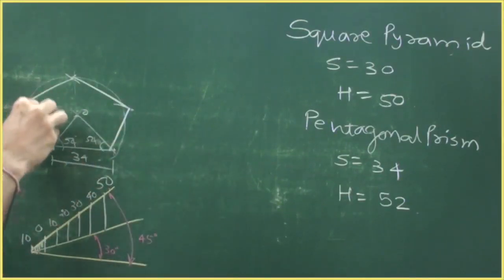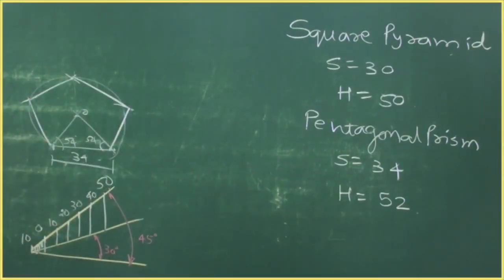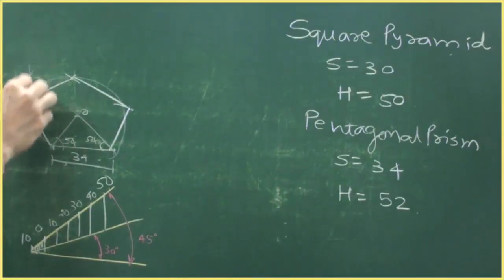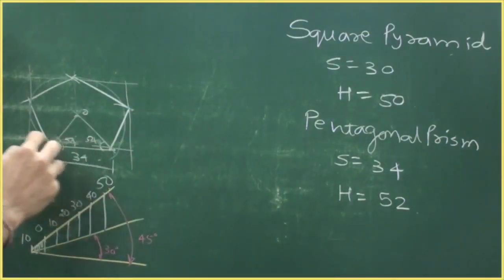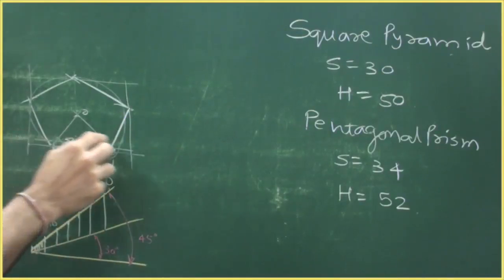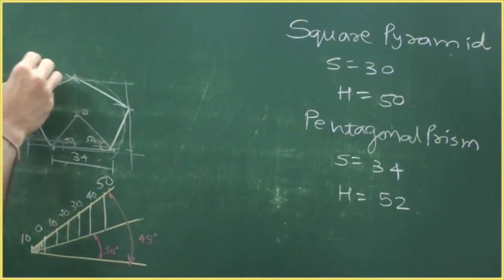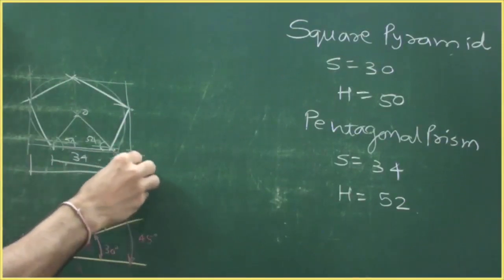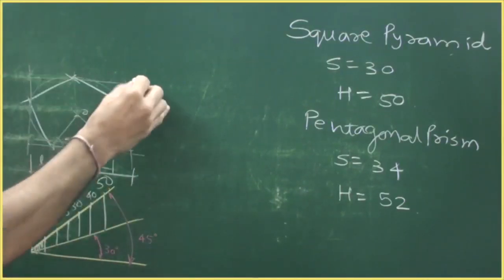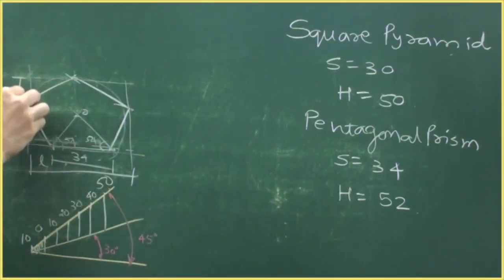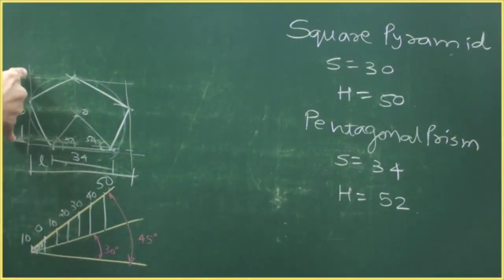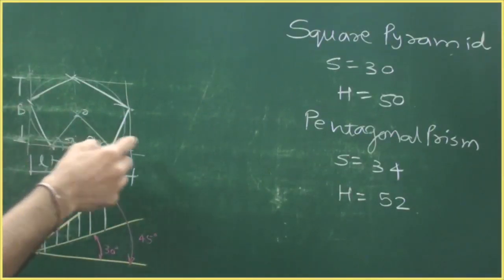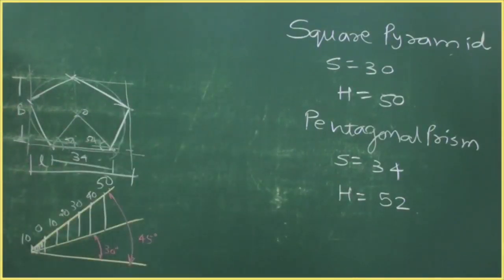First you need to draw the pentagon, then convert it into a box of L, B, H. Always remember: first draw the helping figure, then convert it into a box of LBH. L is this length, and this is the breadth. Now we can start with the box.